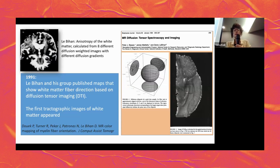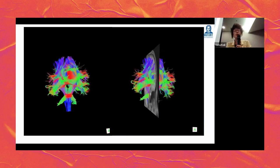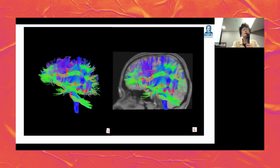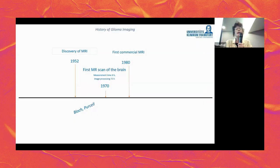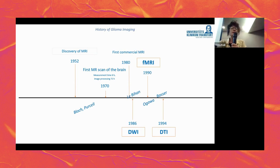Basser was Le Bihan's very important colleague in DTI research, elaborating mathematical models to calculate and quantify anisotropic diffusion. We still use this method today — not only in neuroscience but also in pre-operative planning in combination with functional MRI. Functional MRI was discovered very early, only about 10 years after the commercial distribution of MR scanners.